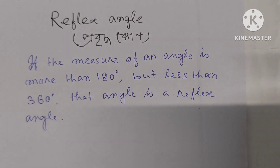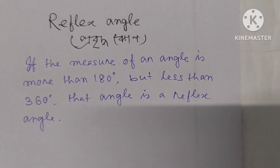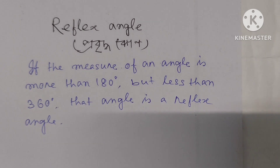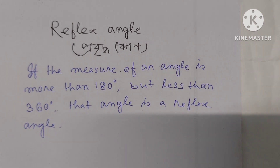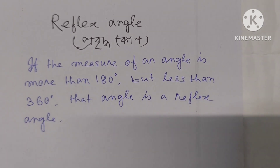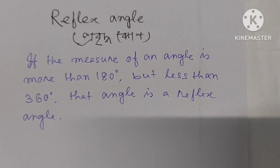Reflex angle: if the measure of an angle is more than 180 degrees but less than 360 degrees, that angle is called a reflex angle.